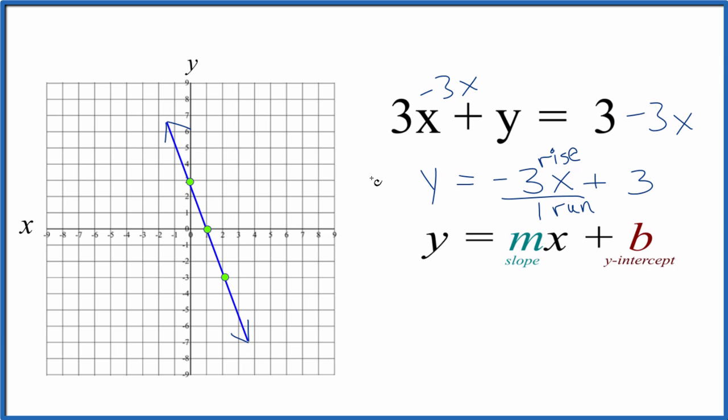So that's the graph for 3x plus y equals 3. We have a slope of negative 3. You could call it negative 3 over 1 if you wanted. And a y-intercept of 3.